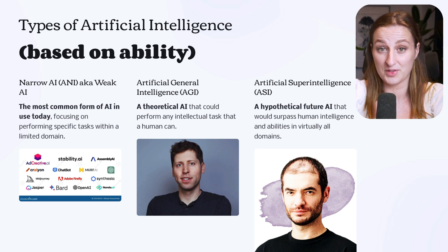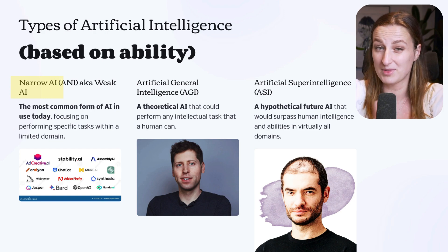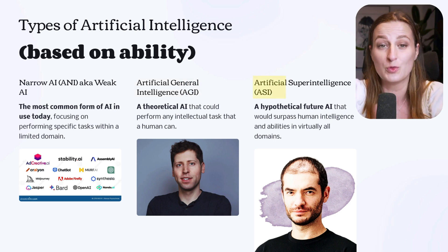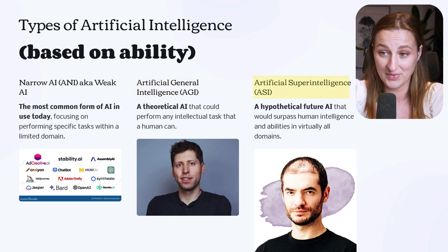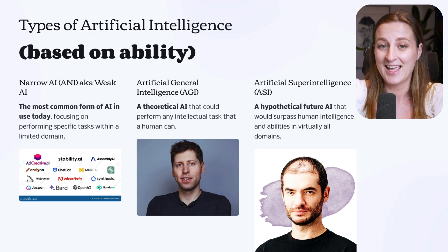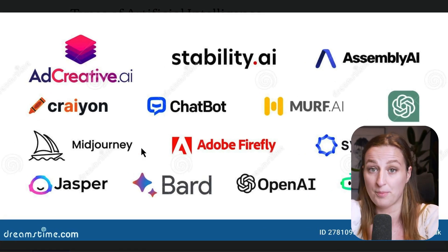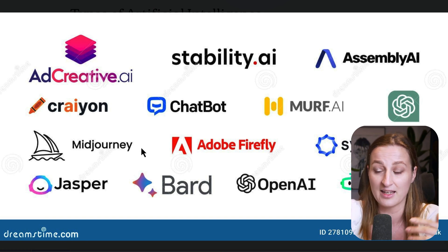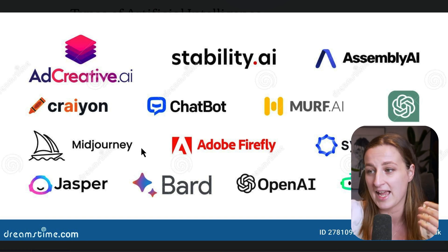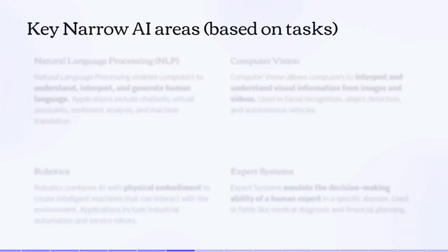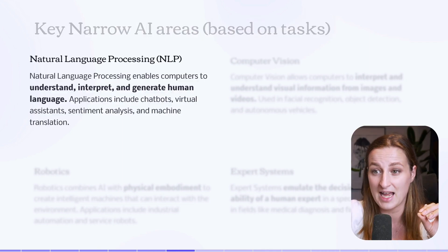In this video I'm going to focus on the type of AI based on ability. So we have narrow AI, sometimes called weak AI, we also have artificial general intelligence, and artificial superintelligence. The most common use of AI today is actually narrow AI — think of popular applications like chatbots, Midjourney, AssemblyAI, ChatGPT, Synthesia, and so on.